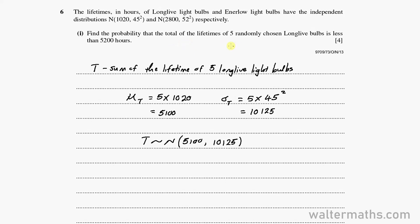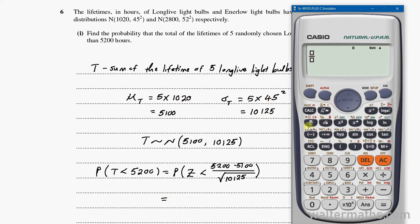The question says find the probability that the total of the lifetimes of the 5 randomly chosen long-lived bulbs is less than 5,200 hours. That's the probability that T is less than 5,200, which standardized is the probability that Z is less than 5,200 minus 5,100 over the square root of 10,125. That's 100 over the square root of 10,125, which gives us 0.994 to 3 decimal places.